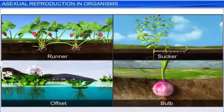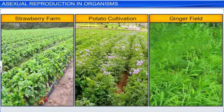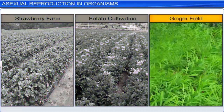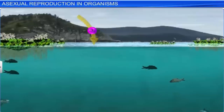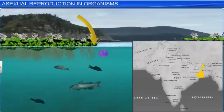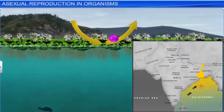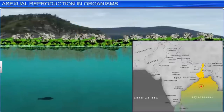Apart from buds and nodes, runners, suckers, offsets, and bulbs are other examples of vegetative propagules in plants. Interestingly, farmers and gardeners make full use of vegetative propagation for commercial cultivation of various plants, including strawberry, potatoes, and ginger. However, vegetative propagation can turn into a problem in certain cases, like the fishermen of Bengal have discovered. Water hyacinth, an aquatic plant with a phenomenal rate of vegetative propagation, is choking the Bay of Bengal and killing millions of fish, thereby ruining the livelihood of the fishing community.